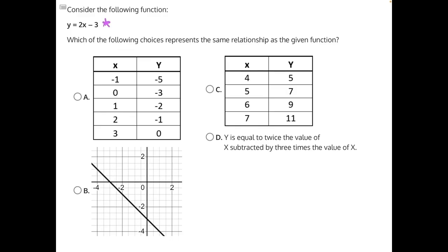Starting with answer choice D, it says y is equal to twice the value of x subtracted by three times the value of x. So let's write this out. y is equal to twice the value of x, or 2 times x, subtracted by 3 times the value of x.